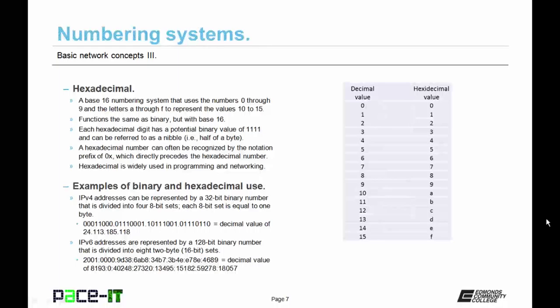Now let's talk about hexadecimal. Hexadecimal is a base 16 numbering system that uses the numbers zero through nine, and then it uses the letters a through f to represent the values ten through fifteen. It functions in the same manner as binary, but with base 16.